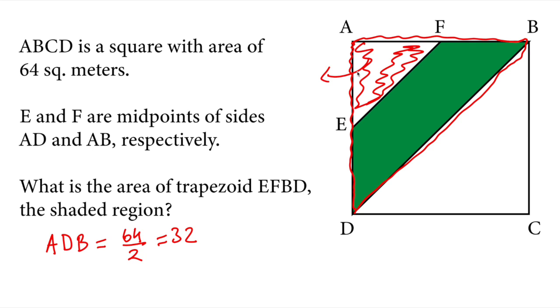Next we need to find out the area of AFE. So the green area we want to know, EFBD, is 32 minus AEF. Let's call it that way.